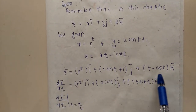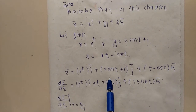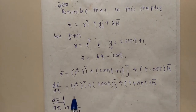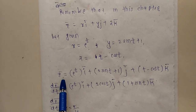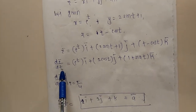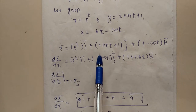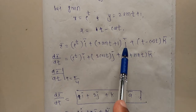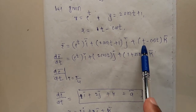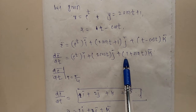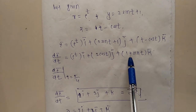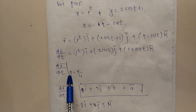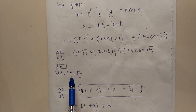Since r̄ is a function of only one variable t, we find the simple derivative dr/dt. The derivative of eᵗ is eᵗ (i). The derivative of (2sin(t) + 1) with respect to t is 2cos(t) (j), since derivative of sin(t) is cos(t) and derivative of 1 is 0. The derivative of (t - cos(t)) is 1 + sin(t) (k).